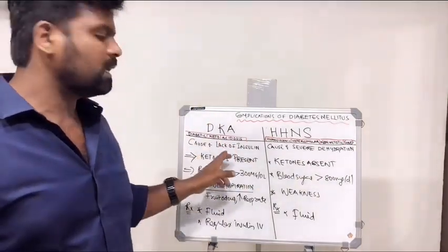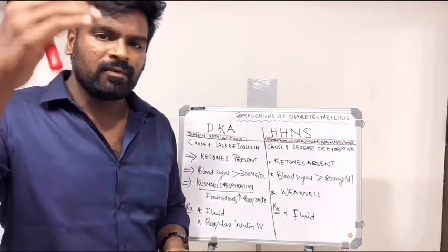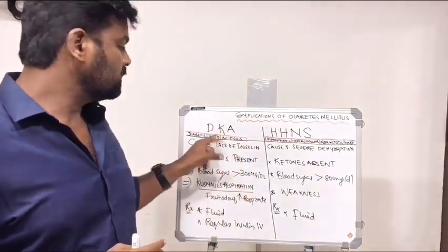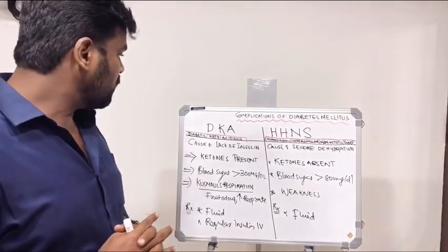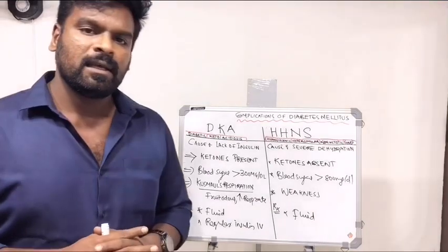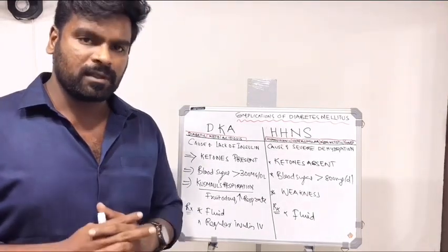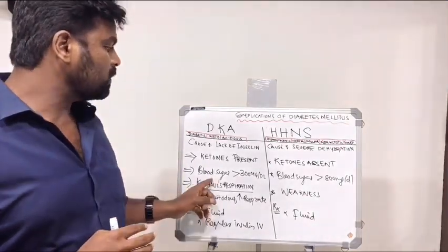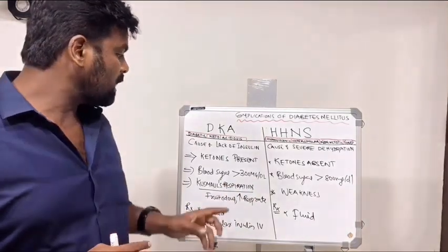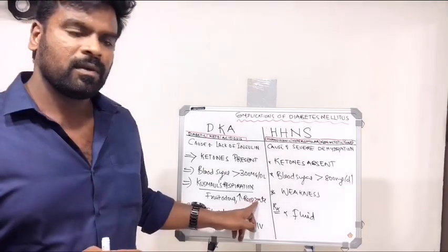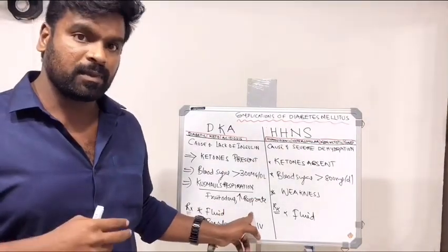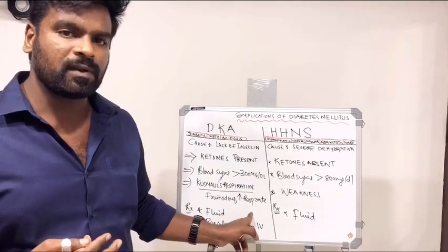The main cause for DKA is lack of insulin. That means if insulin is very low in the body there is a high risk of developing this complication. There will be ketone body production and the blood sugar will be above 300 mg/dL. The most classical feature is Kussmaul respiration — that means fruity odor with deep labored breathing and increased respiration rate.